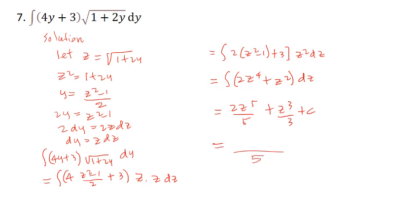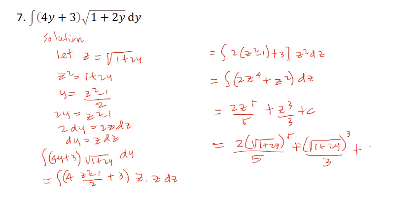Substituting the value of g back in: the answer is 2 over 5 times (1 plus 2y) to the power 5 over 2 plus one third times (1 plus 2y) to the power 3 over 2, plus C.